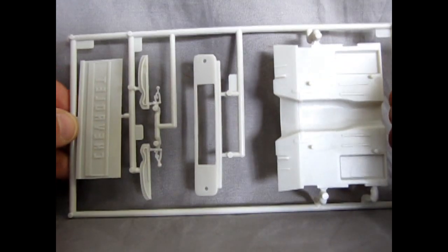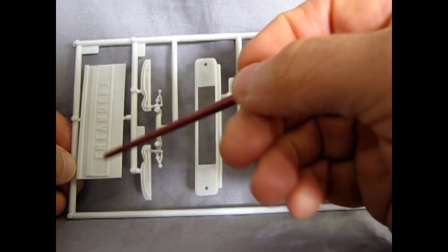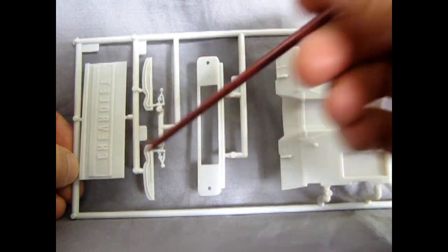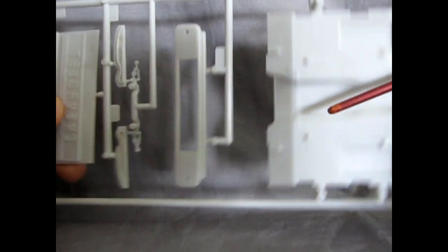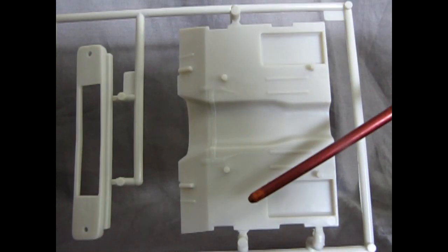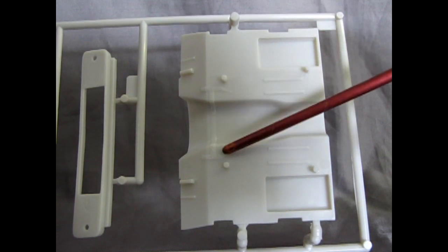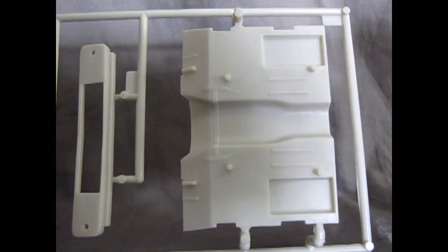There's the tailgate with the sunken in Chevrolet name right on the back of the tailgate. Turn this over, you'll see that it's got raised letters on this side. But they're in reverse, so that'll go on the back. And then look at the nice detail under here of your floor pans. A little bit soft, but you'll be able to see it underneath when you turn the car over.